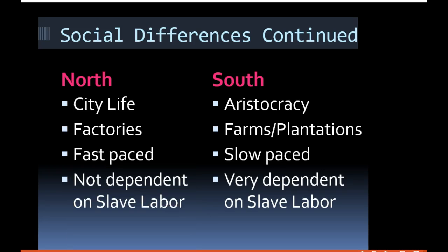In the North there were virtually no slaves because slavery had been made illegal, so they were not dependent on slave labor at all. Whereas in the South, as we talked about with cotton, slavery was a huge factor. These social differences also made a huge difference in leading up to the Civil War.